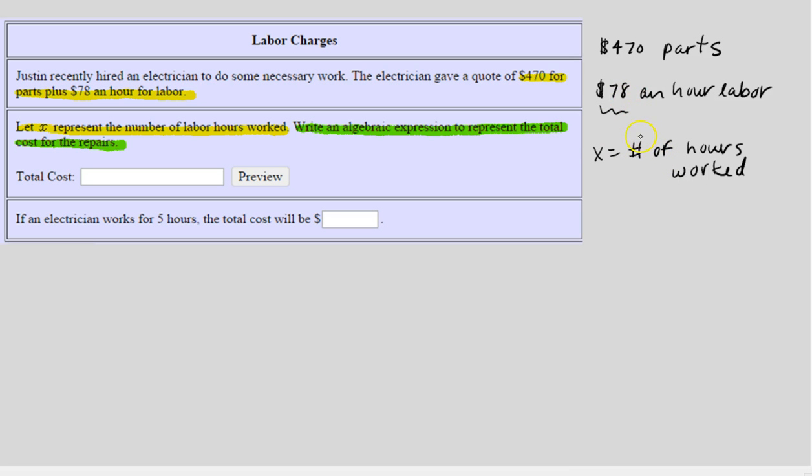it's always $78 an hour, depending on how long it takes the electrician to do the work, you could have to pay 1 times $78 for one hour of work, 2 times $78 for two hours of work, etc. So this part I would say is fixed and this part here is variable, meaning it depends on how many hours worked, which we don't know.